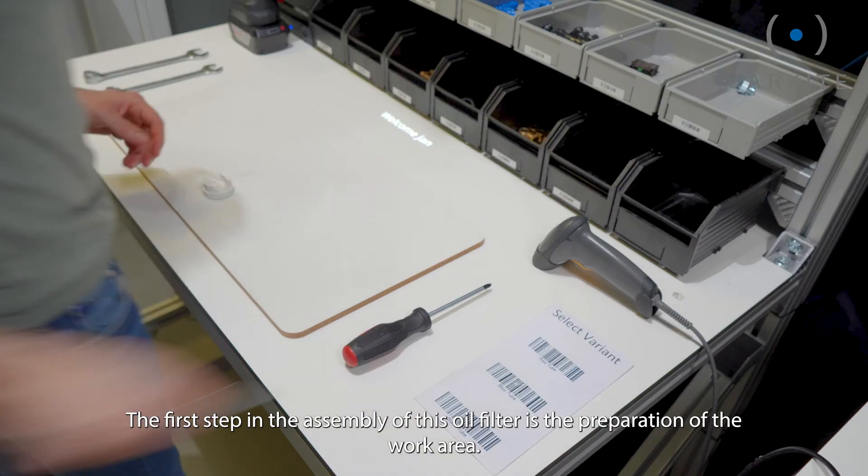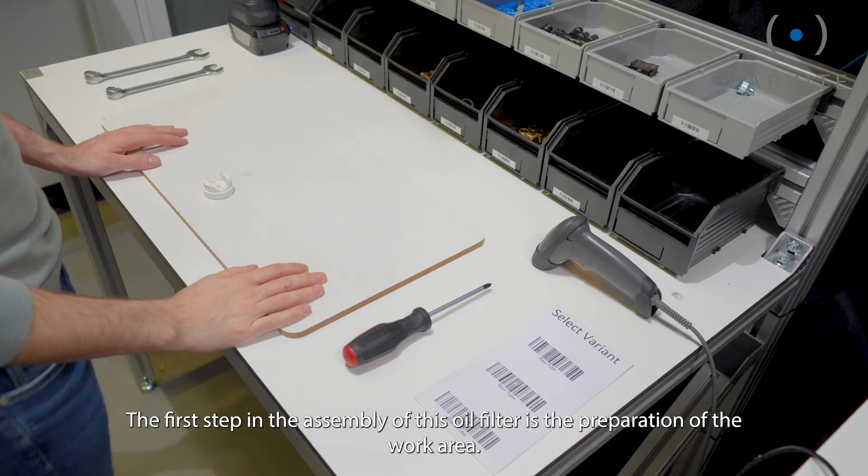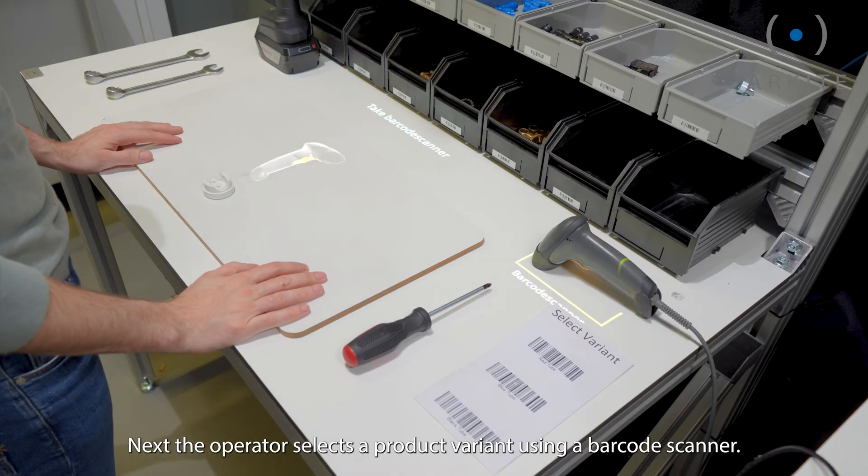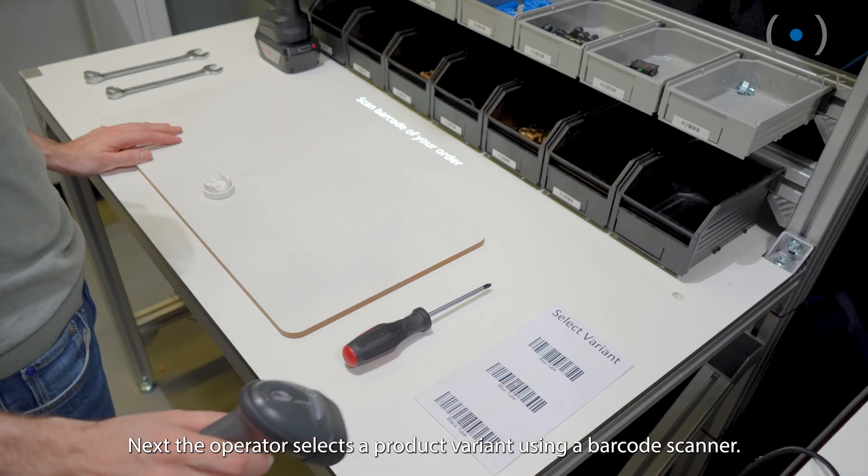The first step in the assembly of this oil filter is the preparation of the work area. Next the operator selects a product variant using a barcode scanner.